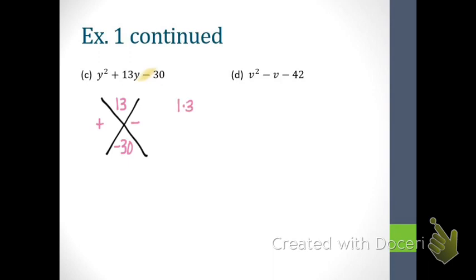The coefficient of Y goes at the top of the X, and the constant — negative 30 — goes at the bottom. When I go to find the factors of 30, I don't have to worry about the negative. Over to the side I list: 1 times 30, 2 times 15, 3 times 10, 4 times anything? No. 5 times 6, and at 6 I start repeating. Since the signs are different, are we adding these factors or subtracting them? Subtracting. Which set of factors can we subtract to get 13? The 2 and the 15.